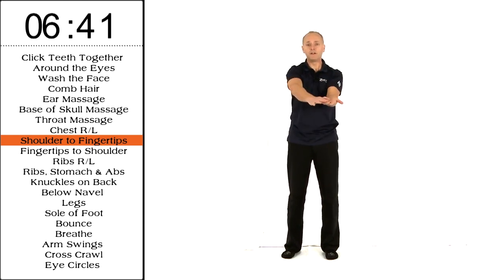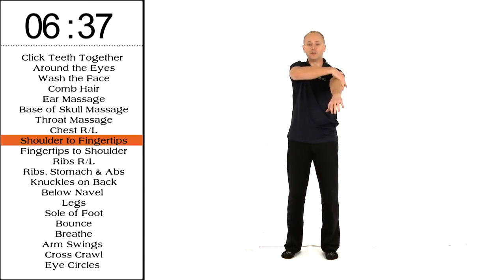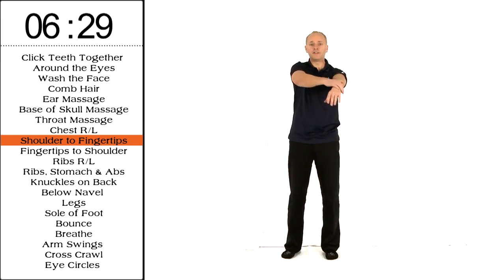Once you've completed your reps here, turn the arm over, start at the fingers, and rub back up toward the shoulder. You want to stay relaxed, especially the rubbing hand. Make sure it's loose so that it contours to the rest of the body.